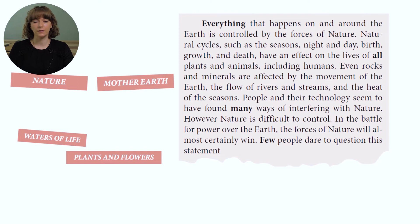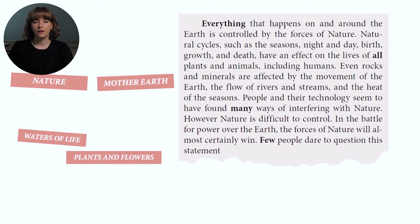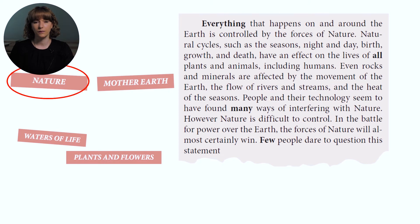Here you have the last piece of reading. Everything that happens on and around the earth is controlled by the forces of nature. Natural cycles such as the seasons, night and day, birth, growth and death have an effect on the lives of all plants and animals, including humans. Even rocks and minerals are affected by the movement of the earth, the flow of rivers and streams, and the heat of the seasons. People and their technology seem to have found many ways of interfering with nature. However, nature is difficult to control. In the battle for power over the earth, the forces of nature will almost certainly win. Few people dare to question this statement. The title of this explanation is Nature.